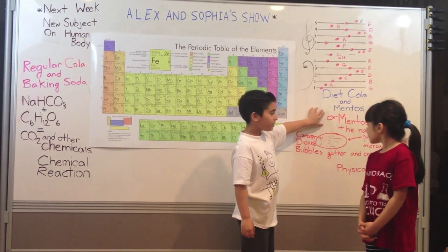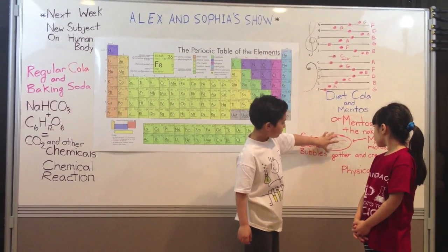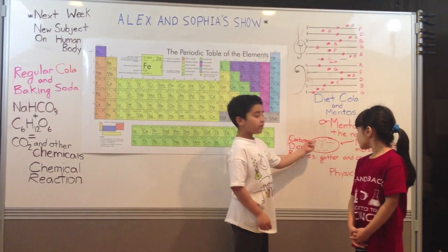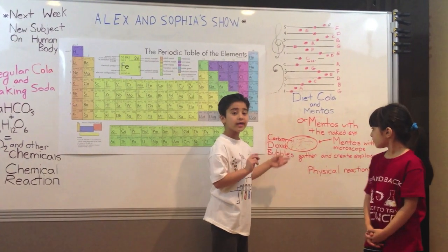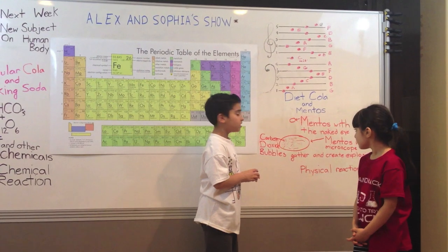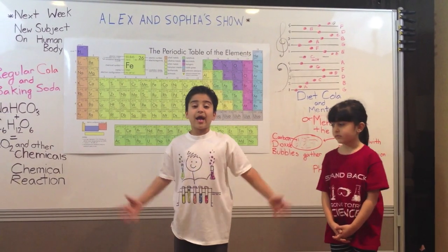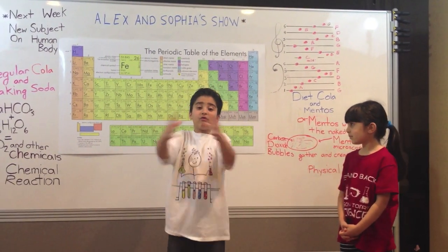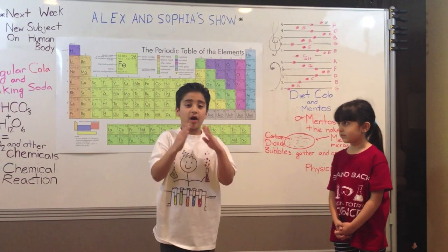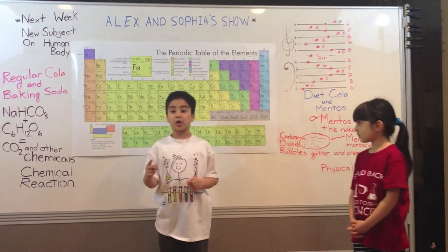Here's what the Mentos looks like regularly, but this is what it looks like under the microscope. In the microscope, they have these small indentations, and those indentations help gather carbon dioxide bubbles and make a huge bubble, and then that erupts. This is called nucleation.